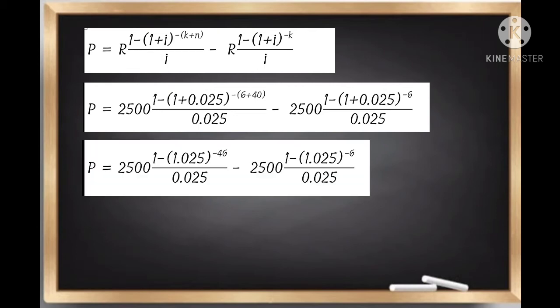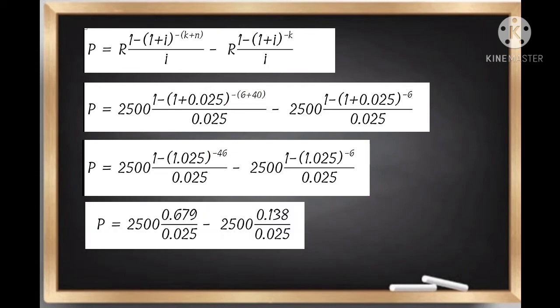Let's add up 1 plus 0.025, which equals 1.025, and 6 plus 40, which is negative 46. Now, we compute 1 minus 1.025 raised to negative 46, which equals 0.679, and 1 minus 1.025 raised to negative 6, which equals 0.138.